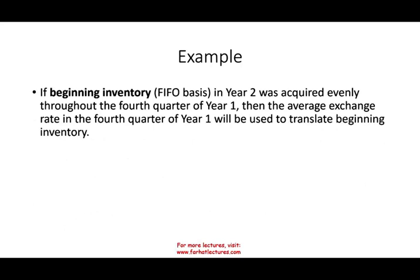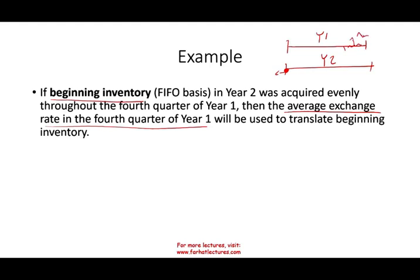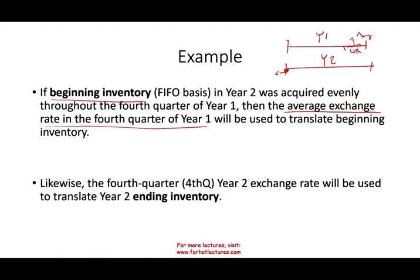Let's take a look at the formulas without numbers. Beginning inventory in year two was last year's ending inventory. If it was acquired evenly throughout the fourth quarter of year one, then the average exchange rate of the fourth quarter will be used. So for beginning inventory, we'll use the average rate of the fourth quarter of year one. We're assuming FIFO, meaning all inventory was purchased in the fourth quarter, therefore we use that fourth quarter rate.